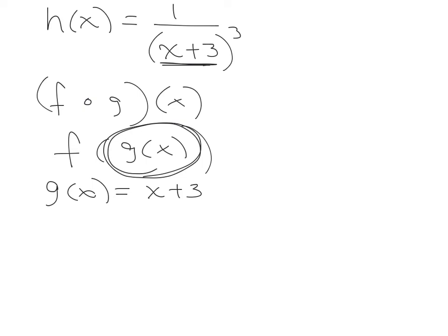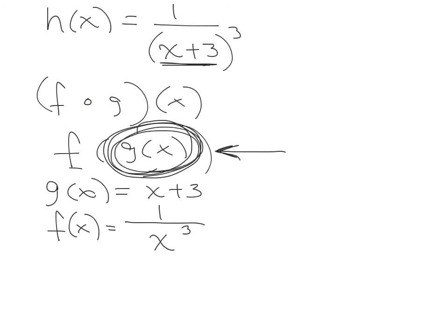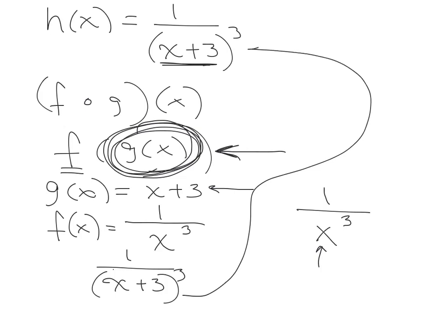For h of x I have 1 over something cubed. Whenever something is being done to that inner piece, that operation is the outer function. So for this one, f of x is 1 over x cubed and g of x is x plus 3. To check: they told us g of x is inside, so everywhere I see an x in f of x I write x plus 3, giving me 1 over (x plus 3) cubed — which is what I started with. That's how decomposition works: you're pulling functions apart to find the two separate pieces.